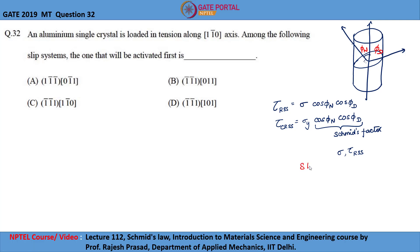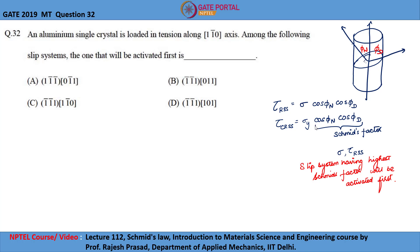The slip system having the highest Schmid's factor will be activated first. So let us find the Schmid's factor for all 4 given slip systems.